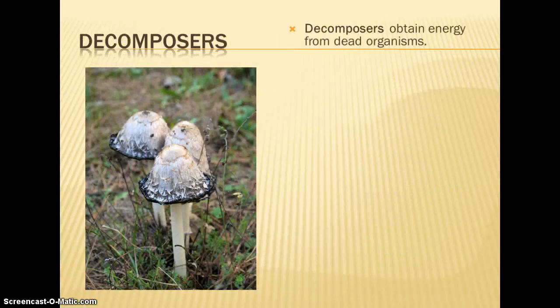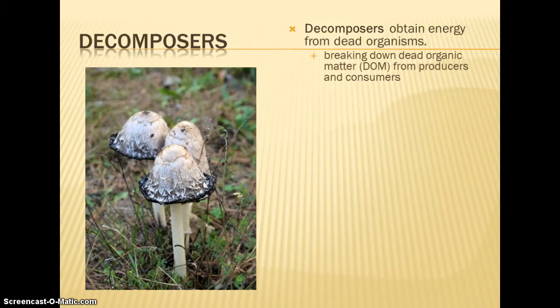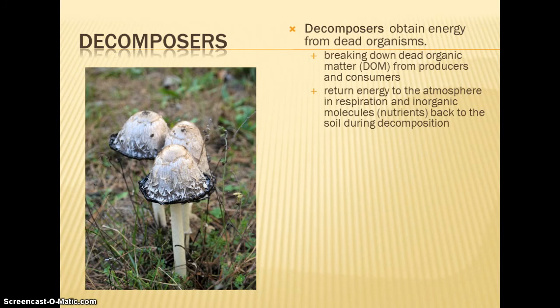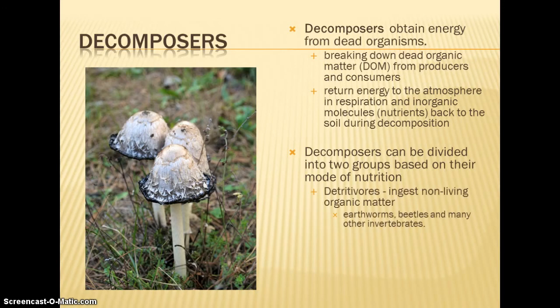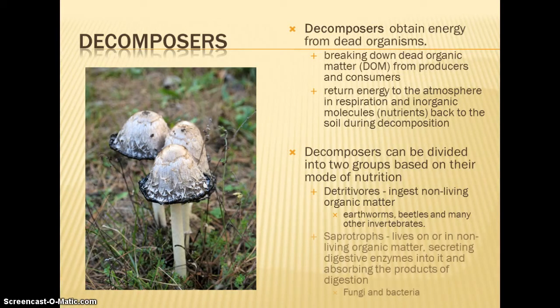Our other types of organisms are our decomposers. They're going to get their energy from dead organisms, whether they're autotrophs or heterotrophs. They break down that dead organic matter, and through respiration, that energy is returned to the atmosphere, and then the nutrients are added back to the soil. So the decomposers play a very important role in cycling our nutrients. We divide decomposers into two different groups. We have our detritivores, which eat non-living organic matter. That's like earthworms moving through the soil and other types of invertebrates.